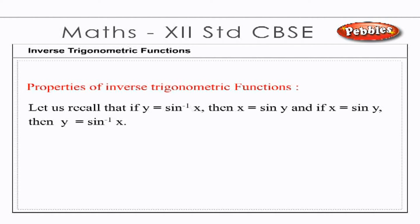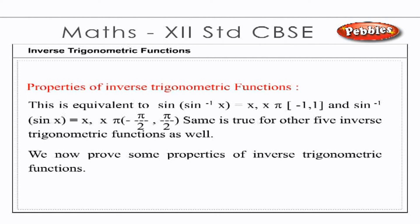Let us recall that if y = sin⁻¹(x), then x = sin(y), and if x = sin(y), then y = sin⁻¹(x). This is equivalent to: sin(sin⁻¹(x)) = x for x ∈ [−1, 1], and sin⁻¹(sin(x)) = x for x ∈ [−π/2, π/2]. The same is true for the other five inverse trigonometric functions as well.